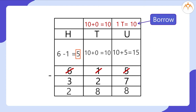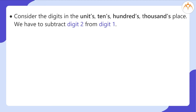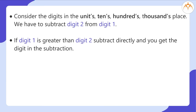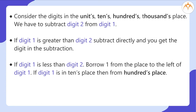615 minus 327 equals 288. We can observe that in subtraction the following operation repeats itself. Consider the digits in the units, tens, hundreds, and thousands place. We have to subtract digit 2 from digit 1. If digit 1 is greater than digit 2, subtract directly and you get the digit in the result. By repeating the process we move one place to the left. If digit 1 is less than digit 2, then borrow 1 from the place to the left — if digit 1 is in the tens place, then borrow from the hundreds place.